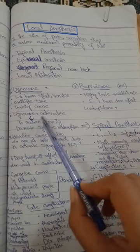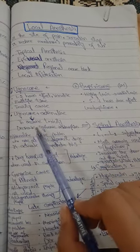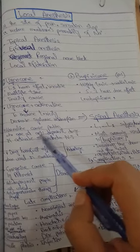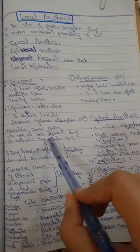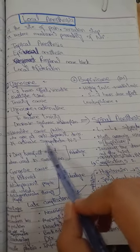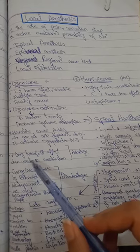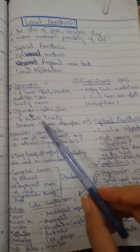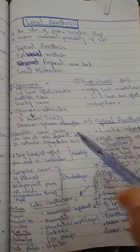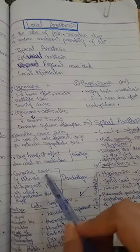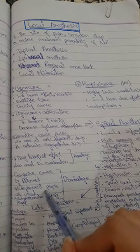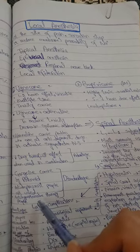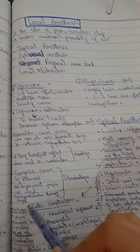If lignocaine is given with adrenalin, it reduces toxicity and decreases systemic reabsorption. Adrenalin causes problems for patients on antidepressant drugs as it activates the sympathetic nervous system. The advantage is that the drug combination — lignocaine with adrenalin — is less harmful. The disadvantage is that it can cause gangrene; antidepressant and antihypertensive patients cannot use it.